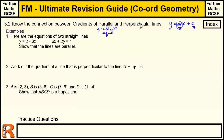For perpendicular lines, a perpendicular line has a negative reciprocal gradient. That means 1 divided by the original gradient, with the sign changed. If the gradient is a fraction, you simply turn it upside down. For example, if the gradient is 3, the perpendicular gradient is minus one third. If the gradient is minus 5 over 4, the perpendicular gradient becomes positive 4 over 5 — you turn it upside down and change the sign.